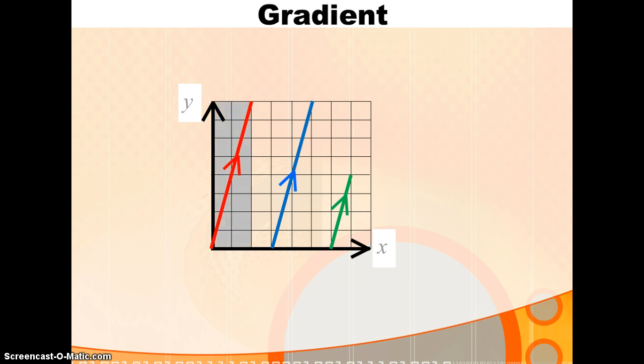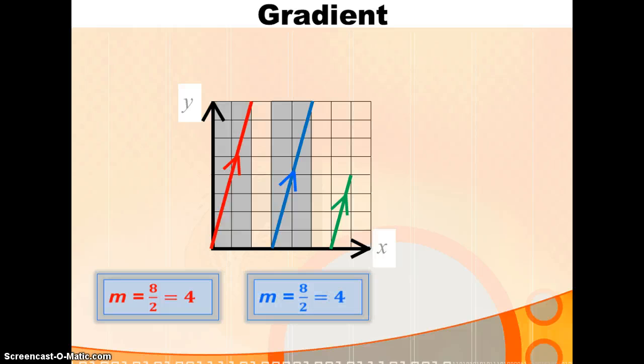So, what can we say? The gradient of the red line is 8 over 2, which is 4. The gradient of the blue line is also 8 over 2. Rise over run. 8 over 2, which is 4. The gradient of the green line is rise over run. So, 4 over 1. 4 divided by 1 is 4. So, what conclusion can we make about parallel lines? Parallel lines have the same gradient.